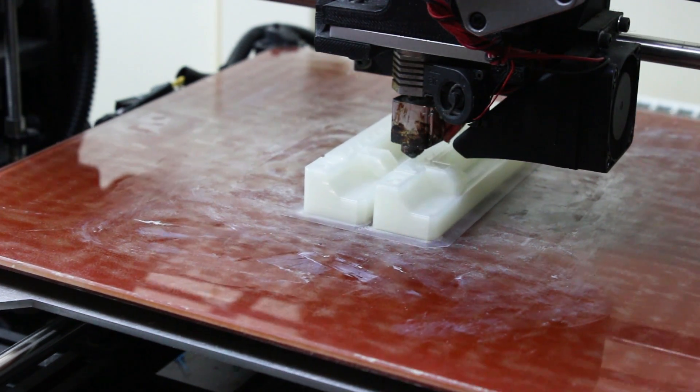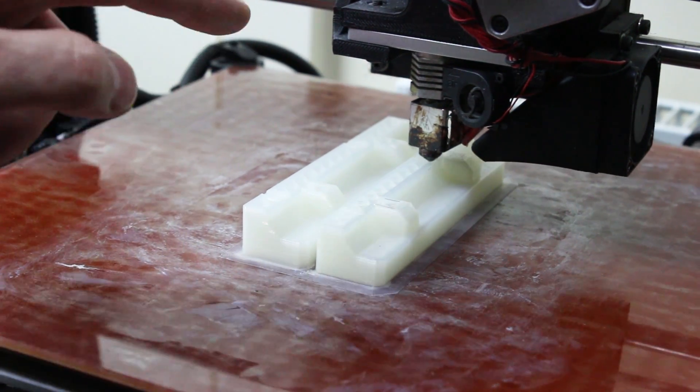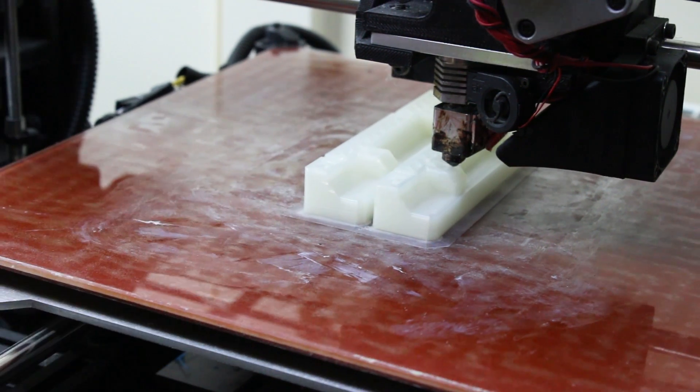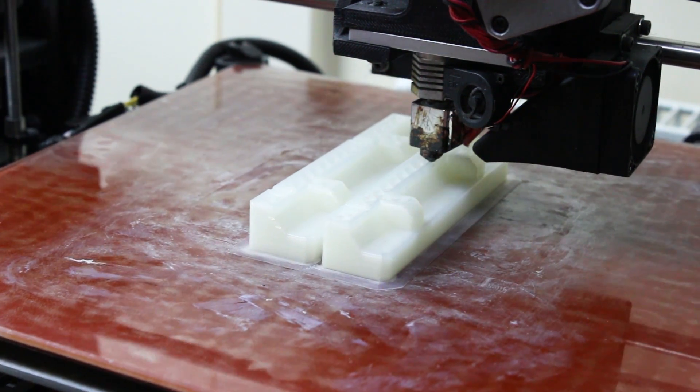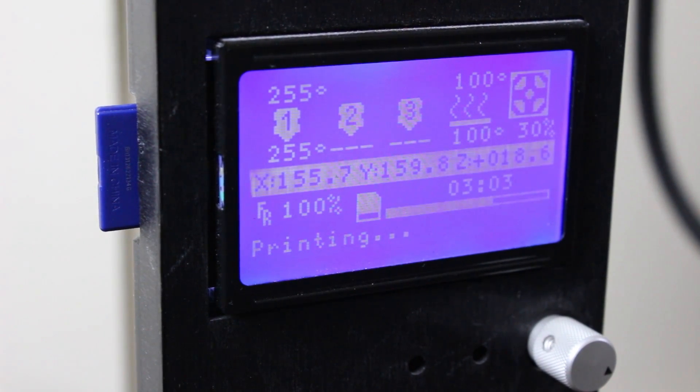Here are two of those parts printed in Taulman alloy 910. And I'm printing straight on the glass here with a Yoohoo glue stick for adhesion. These prints are pretty long. I'm printing at 50mm a second. So we're up to three hours so far. So I think this is going to be four and a half to five hours.